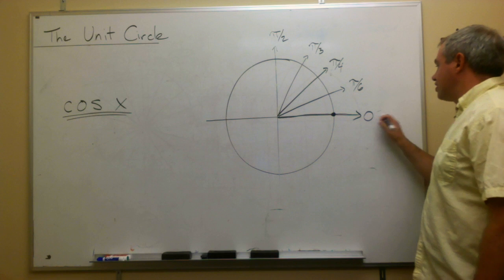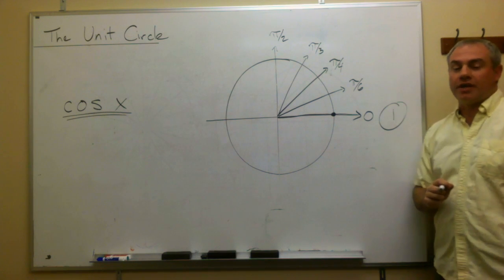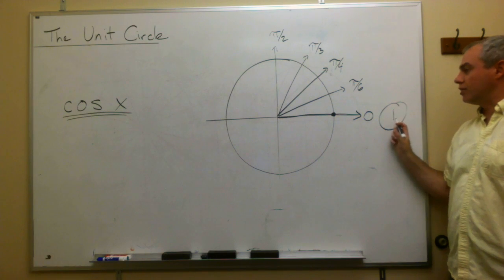So out here by zero, I'm going to put its cosine value. And its cosine value is one. And I'll just circle it right there to make it very clear that the cosine of zero is one.